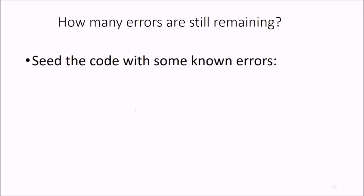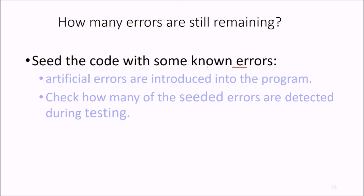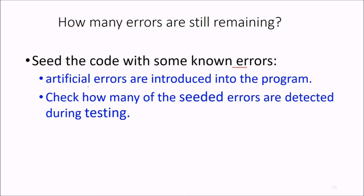How many errors are still remaining, how you are going to know that? We seed the code with some known errors, means we inject some errors which are known. These are called artificial errors and they are introduced in the program. Then we try to find out, we test these seeded errors or injected errors and check how many of these injected errors are detected during testing.